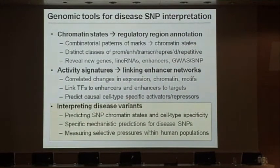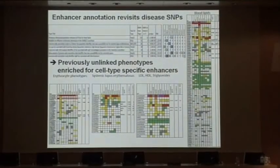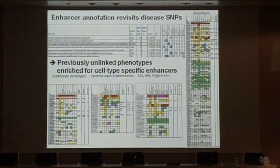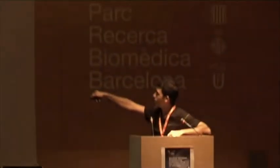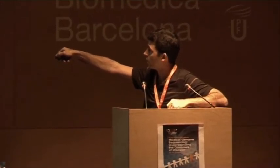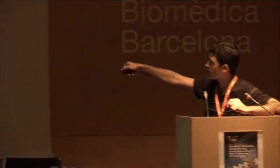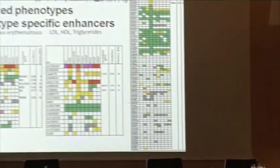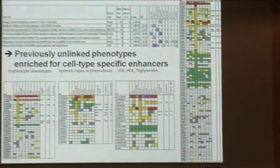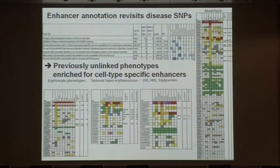And we've started predicting causal cell type-specific activators and repressors. Can we use all that information to interpret SNPs that emerge from disease studies? The answer is yes. We've taken a number of studies from recently published papers, taken all of the SNPs associated with each study, and looked at the chromatin state annotation for the region associated with the top SNP in each cell type. What we're finding is that for each of the studies, a single cell type emerges where a large number of the SNPs are found exactly in the region predicted to be an enhancer, specifically in K562.